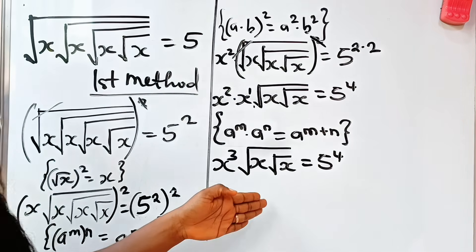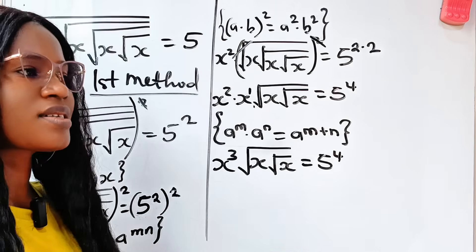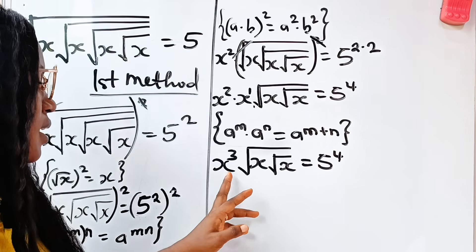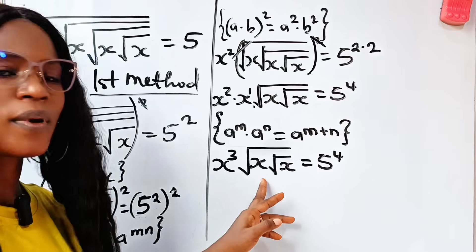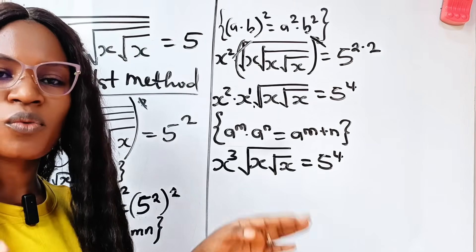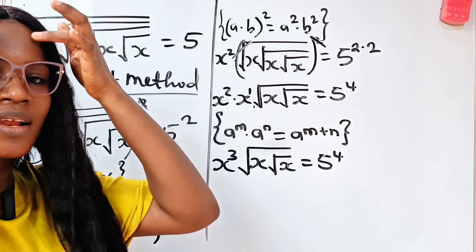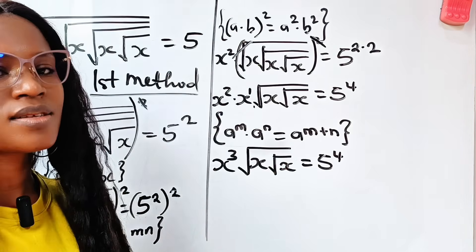We are going to square again. Our intention is to get x, and the only way to remove a square root in an equation is to square it.